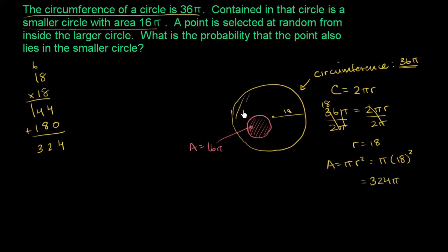So the area of the entire larger circle, the part that I've shaded in yellow, including what's under this orange circle. This area is equal to 324 pi. So the probability that a point that we select from this larger circle is also in the smaller circle is really just the percentage of the larger circle that is the smaller circle.